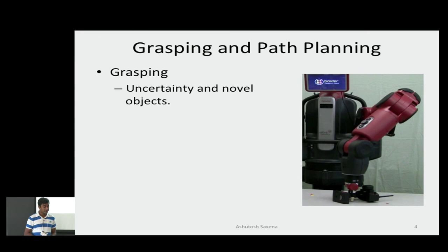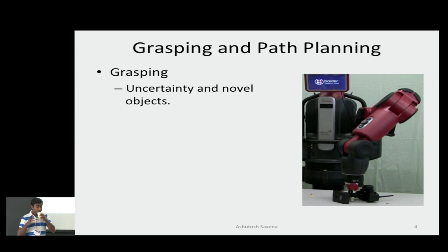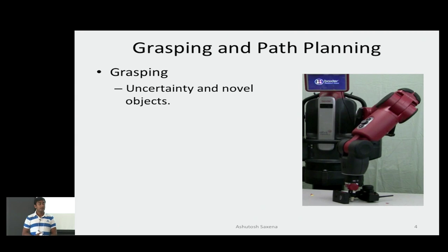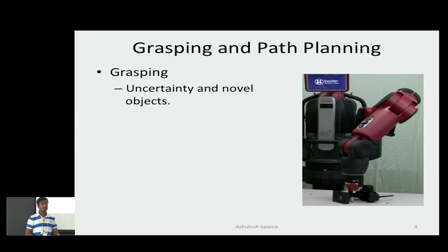The next thing we wanted to figure out was: if we have a goal such as grasping, where we have to grasp many different kinds of objects that the robot may not have seen before, how can we enable different robots — PR2, Baxter, or industrial robots — to learn these objects and learn how to pick them up? This is challenging because every object looks very different. How do we factor out the variations and only retain the features related to grasping?